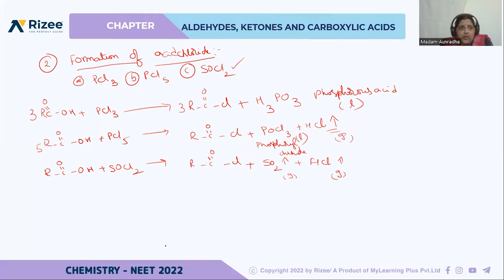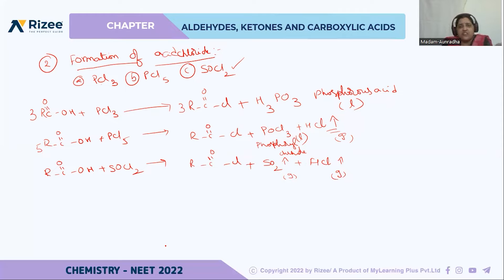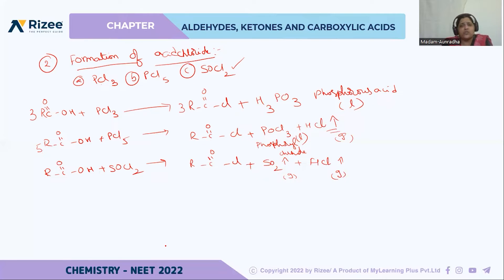So, if carboxylic acid reacts with PCl3, PCl5, or SOCl2, the major product is acid chloride only. But looking at the byproducts: with PCl3 it forms phosphorous acid, which is a liquid; with PCl5 one gaseous molecule forms; and with SOCl2 two gases are liberated. Among all three, the reaction with thionyl chloride (SOCl2) is the best one.